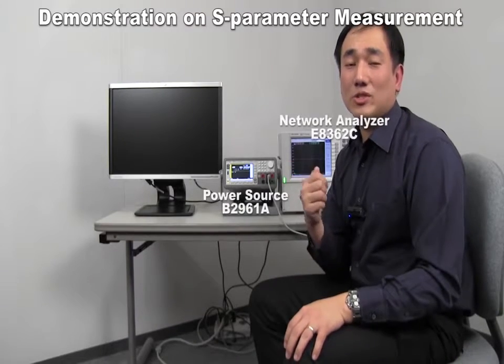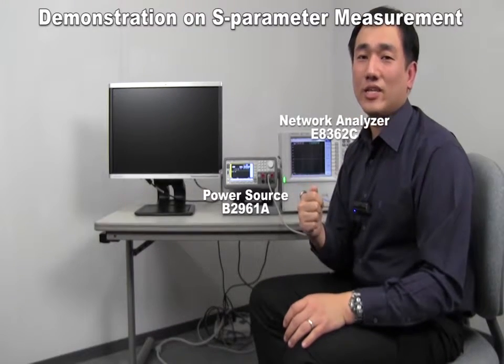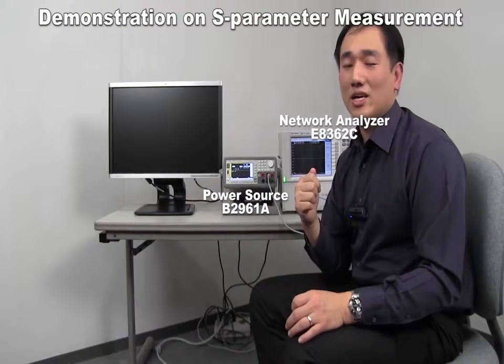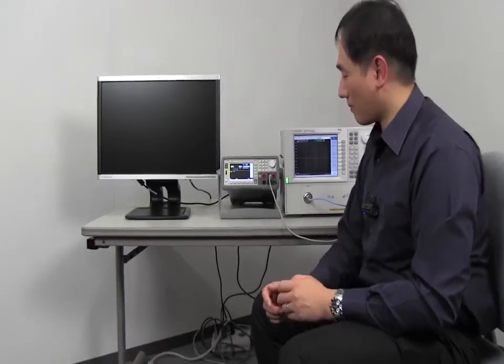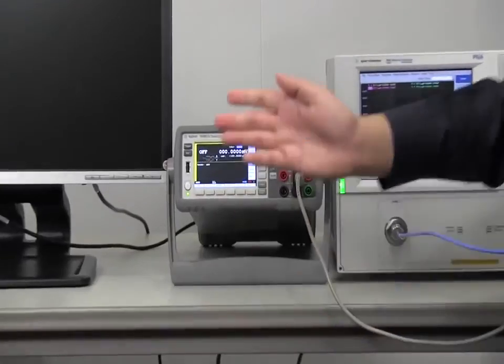So, let me demonstrate how to evaluate the LNA using a current source biasing. You can use the previous voltage source and bias resistor setup. Just change the voltage source into current source. So, let me set the power source.